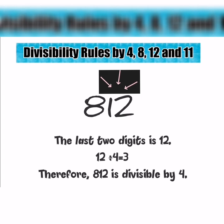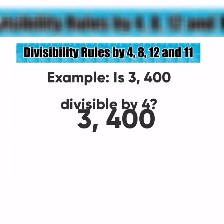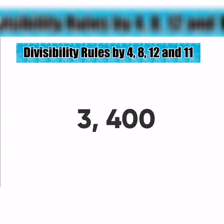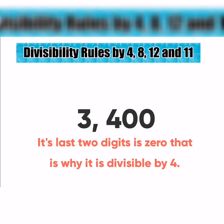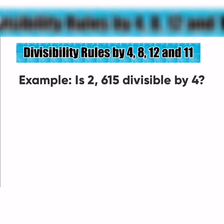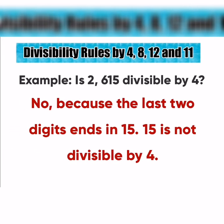Let's have another example. Is 3,400 divisible by 4? If your answer is yes, you are correct. If you look at 3,400, its last two digits are 00. That is why it is divisible by 4. Another example: Is 2,615 divisible by 4? The answer is no, because the last two digits end in 15. 15 is not divisible by 4.